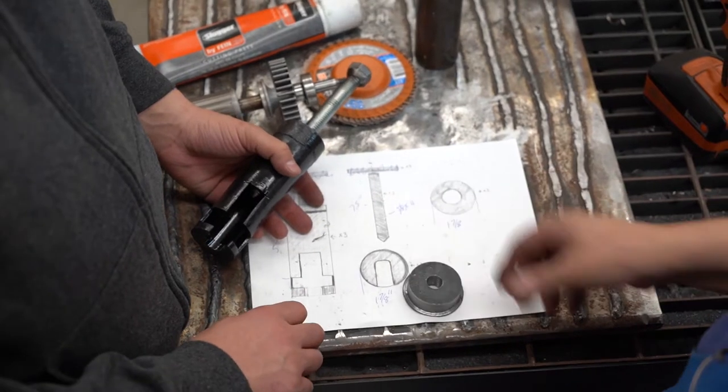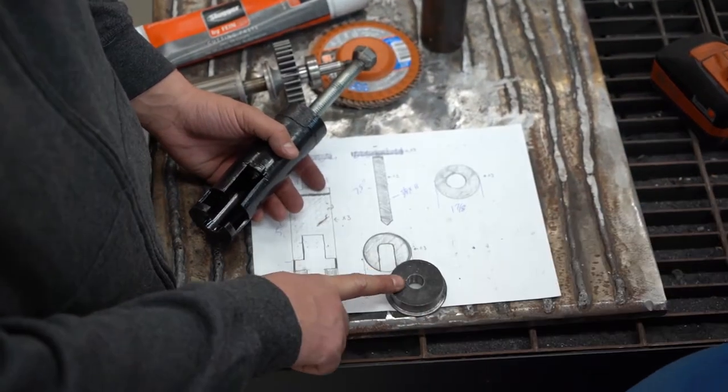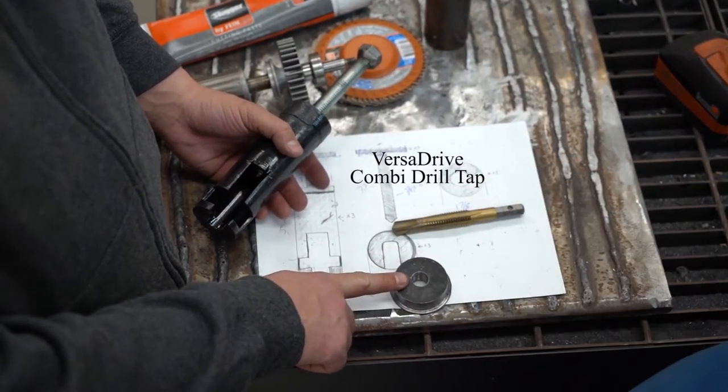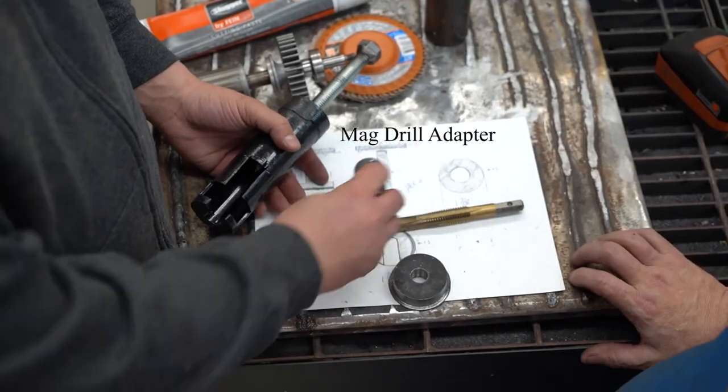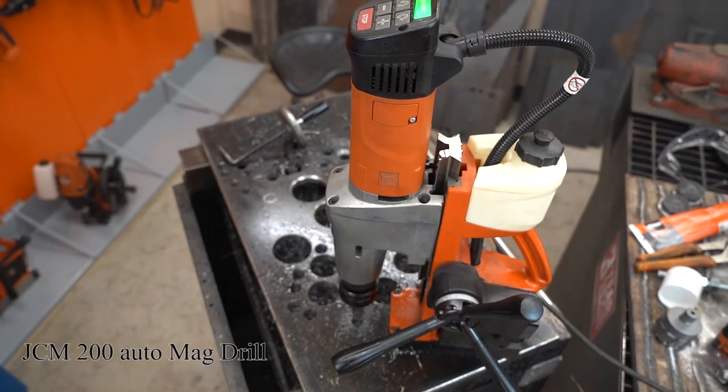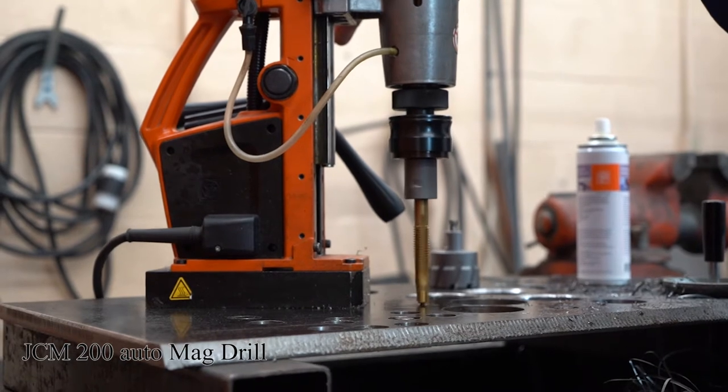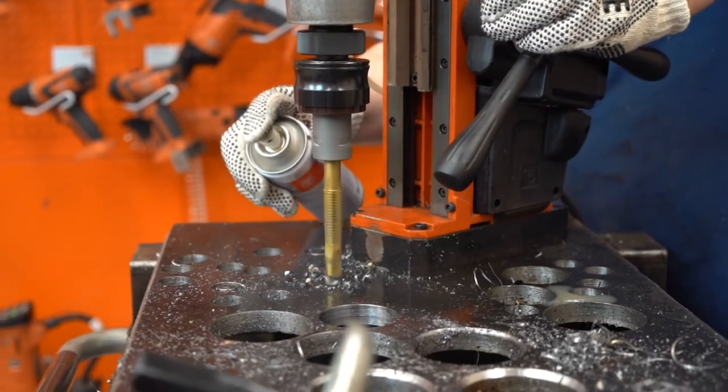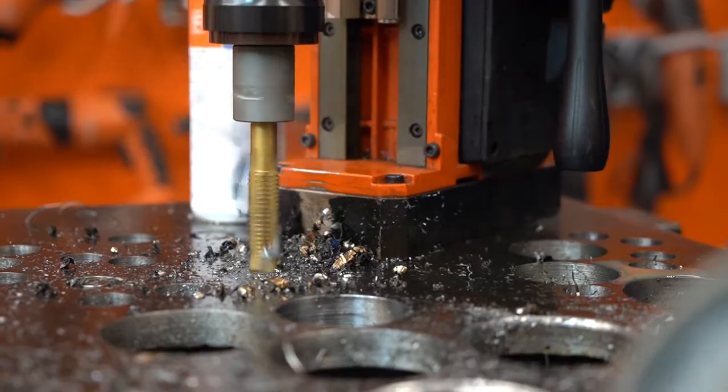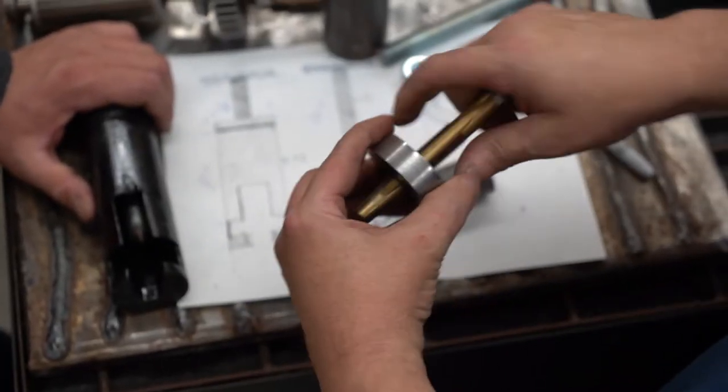For the top, we started on a piece of 3 quarter inch plate. I used the VersaDrive combi drill tap and the mag drill adaptor. I used the JCM200 auto mag drill, drilled and tapped a 5-8 to 11 hole. Did a really nice job threading, did it with a mag drill, did it in one shot.